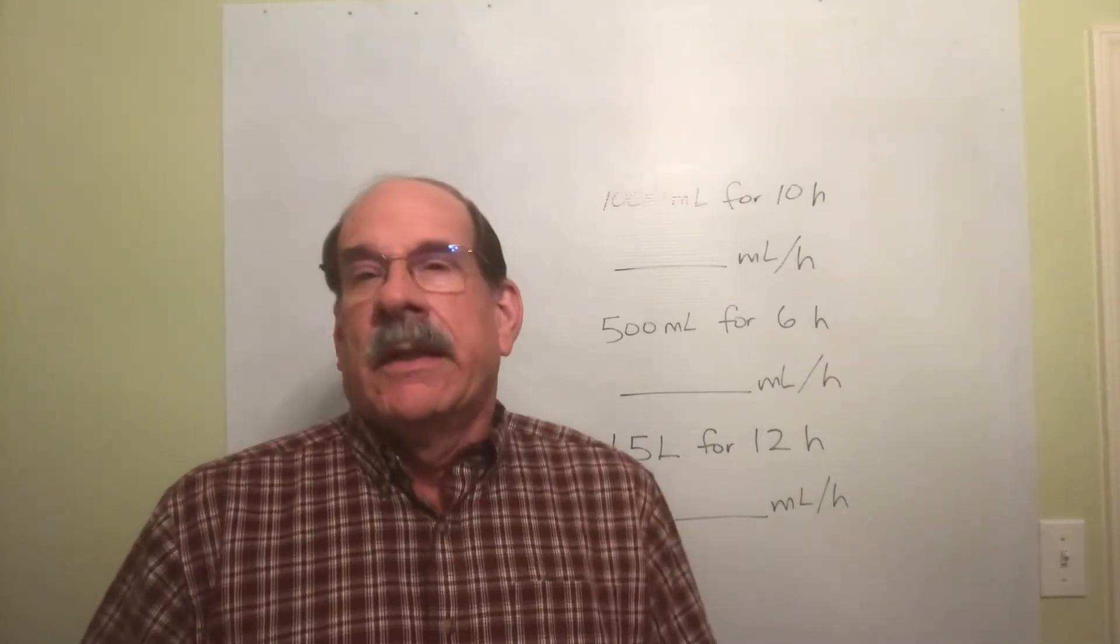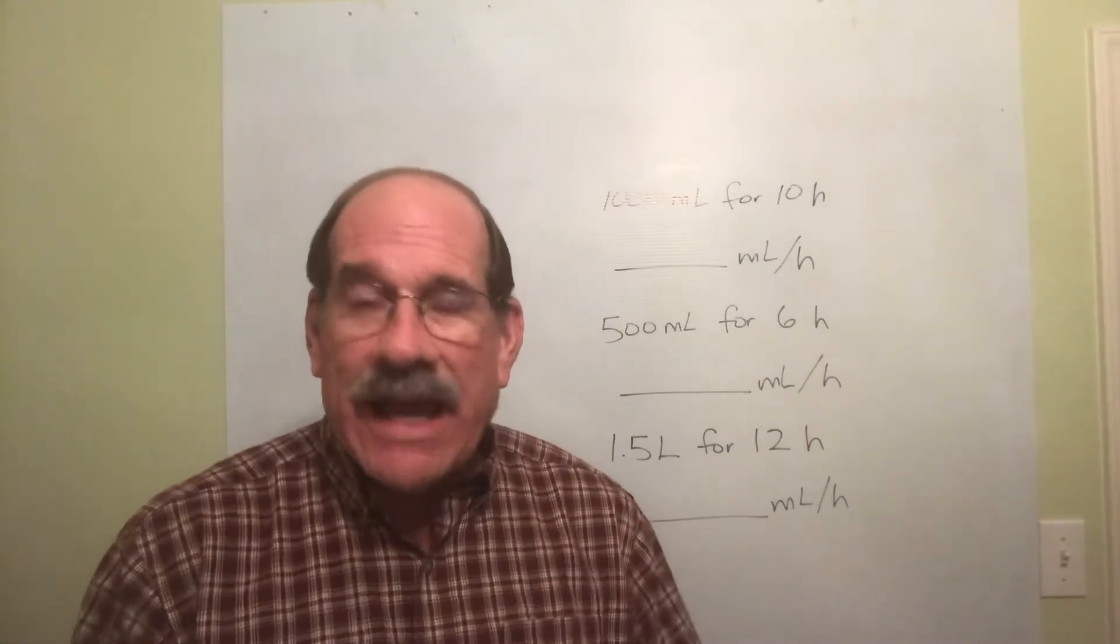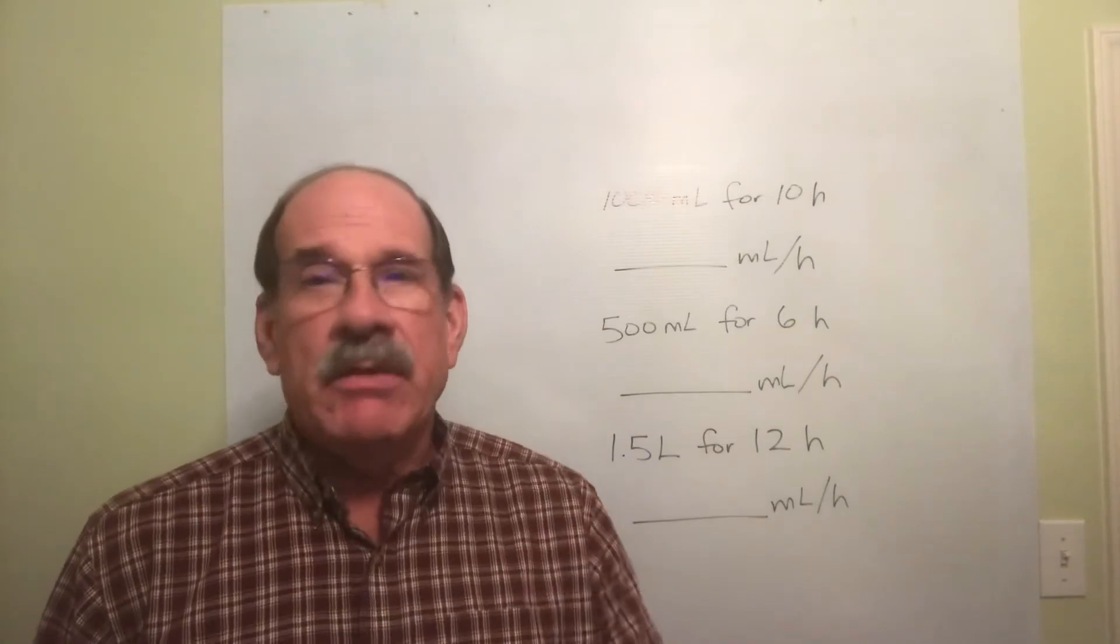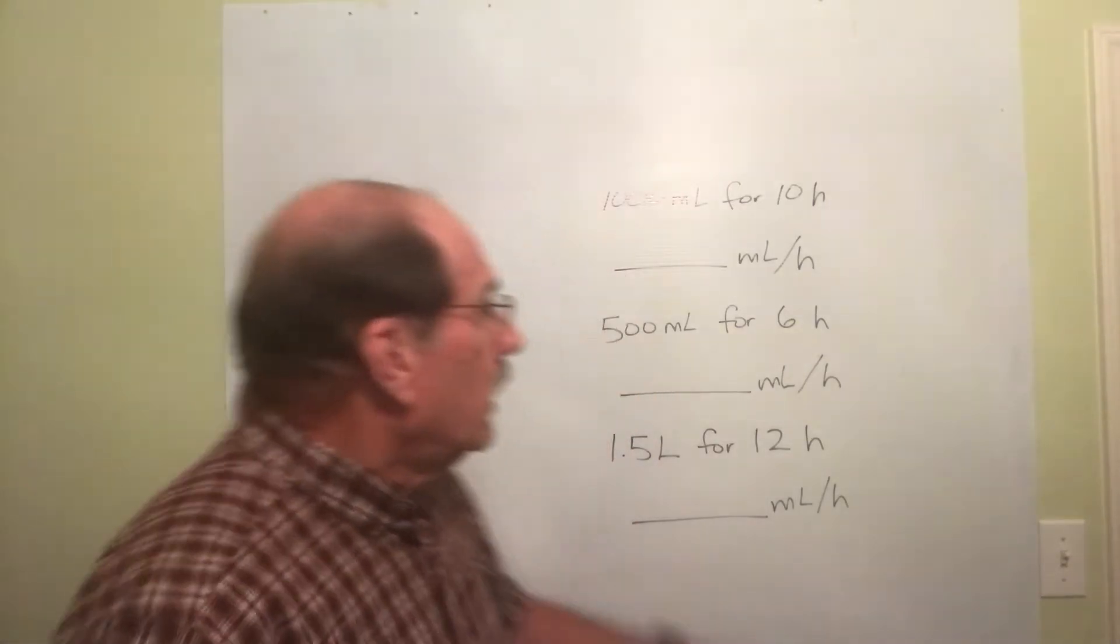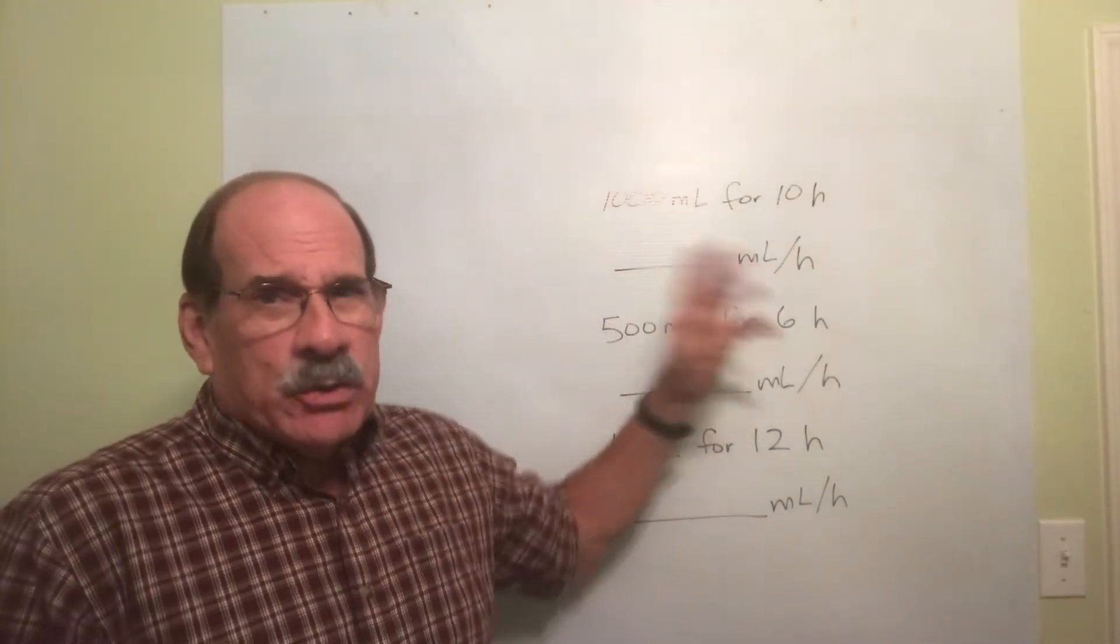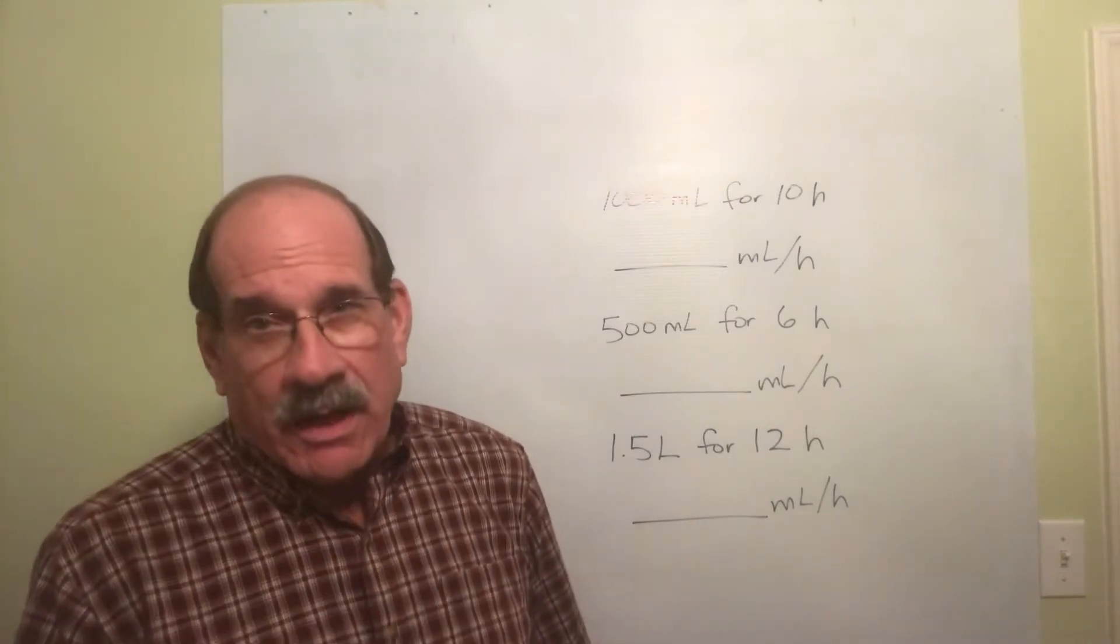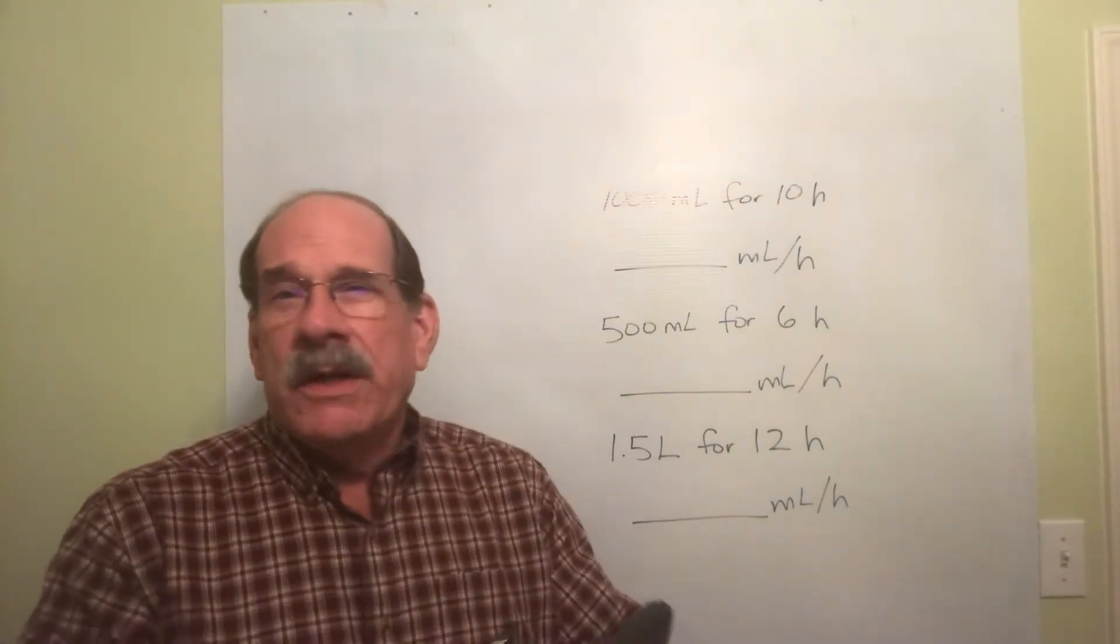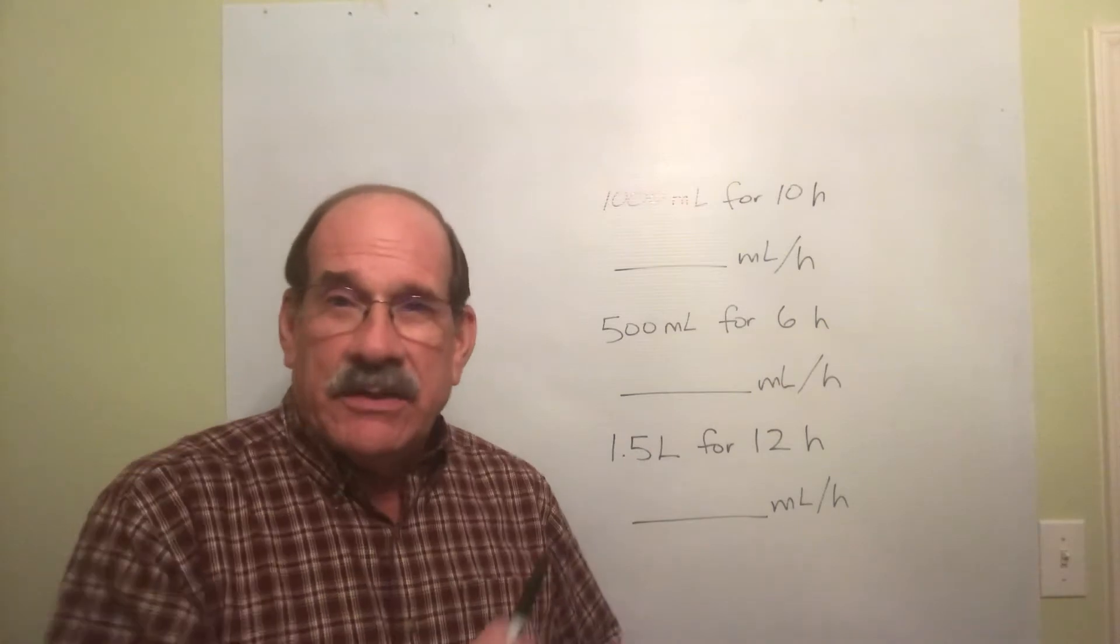Let's start in with this IV stuff. Any time you have a machine - an infusion pump, infusion controller, syringe pump, something like this - you've got to find milliliters per hour. Now I'm going to try to make this hard, but that won't be easy. This is pretty simple stuff. Well, it gets a little more complicated, but let's start real simple.